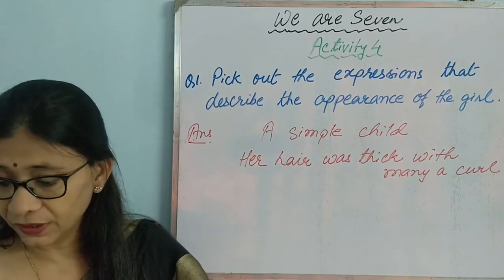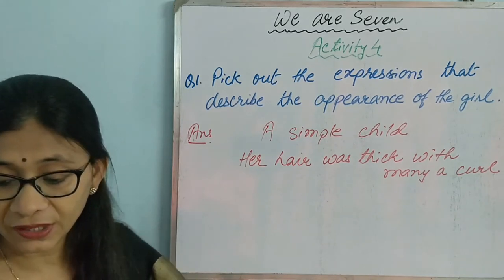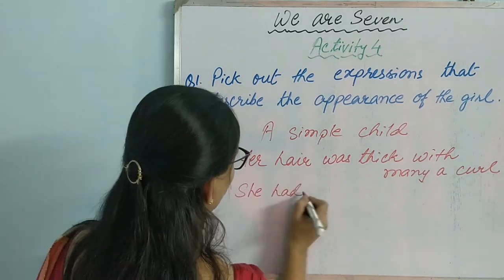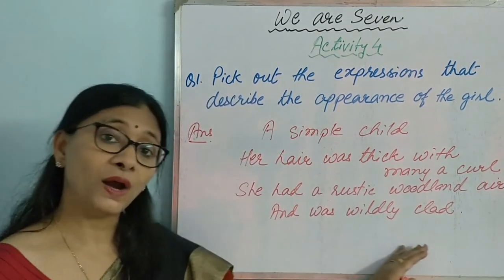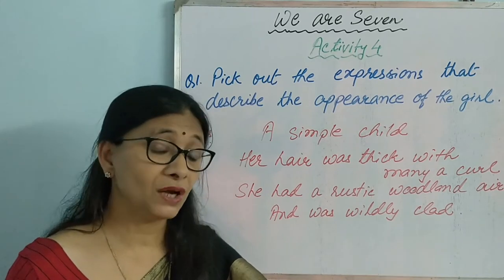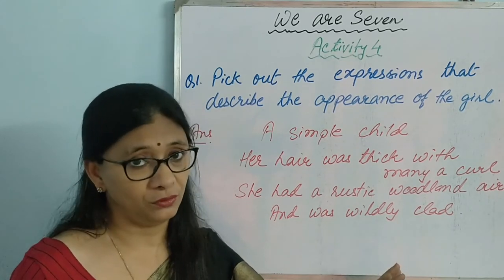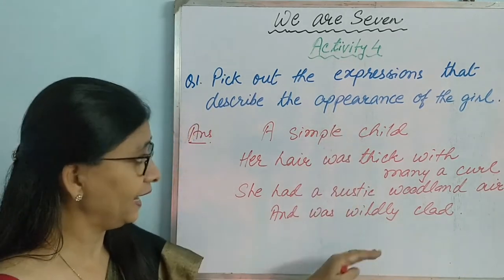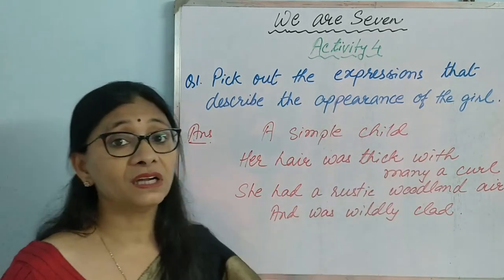'That cluster round her head. She had a rustic woodland air.' This also describes her appearance. 'She had a rustic and was wildly clad' — meaning she was dressed carelessly, in an untidy manner. These are the lines below that describe the appearance of the girl.